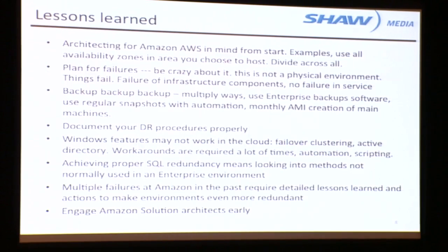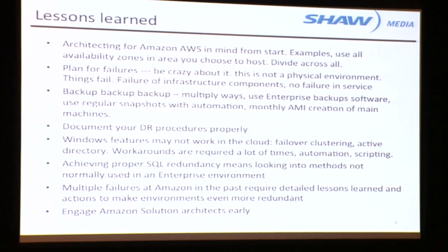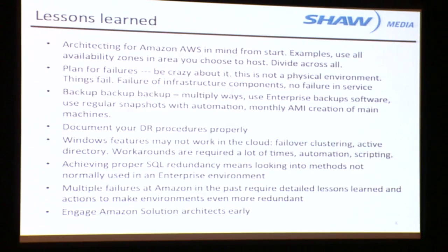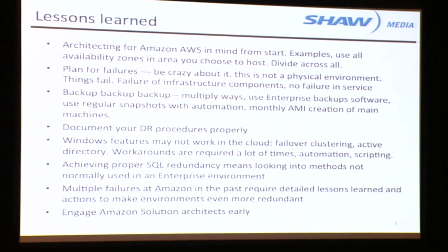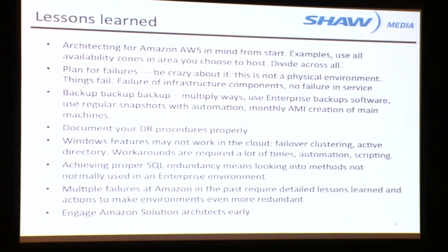Plan for failures — be crazy about it. Things fail. Back up, back up, back up. In the enterprise we use a lot of backup software, but on Amazon we go further: we take AMIs of all our servers monthly, take EBS snapshots, have multiple ways to recover, and replicate to another S3 region. A big challenge on Windows: things like SQL Server failover clustering don't work as prescribed, and Active Directory doesn't have a static IP, so you have to find workarounds — sometimes using technology released ten years ago by Microsoft.